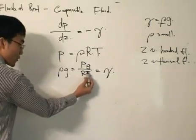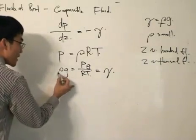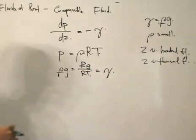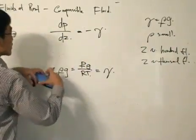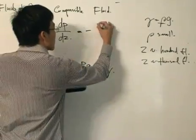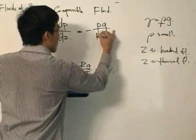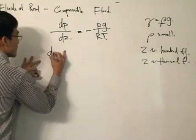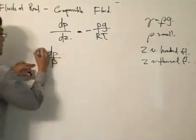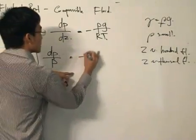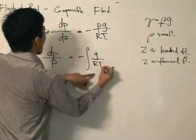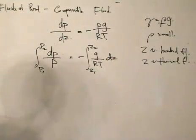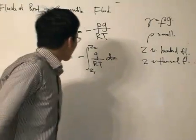This equation accounts for the fact that pressure and temperature vary, so density varies accordingly. Substituting into our pressure-elevation equation gives dp/dz in terms of P, g, R, and T. Separating variables and integrating: ∫dp/P from p1 to p2 equals -∫(g/RT)dz from z1 to z2.